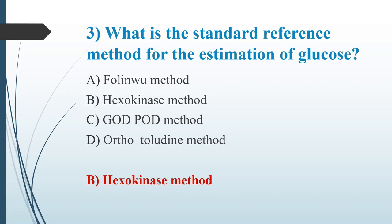The hexokinase method is an enzymatic method and a kinetic assay. The filter used is 340 nanometers. Option A, the Folin-Wu method, is an alkaline copper reduction method. The GOD-POD method is also an enzymatic method but is an endpoint assay; the filter used is 505 nanometers. The orthotoluidine method is a condensation method.